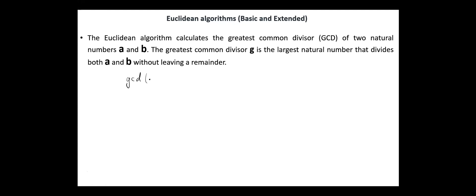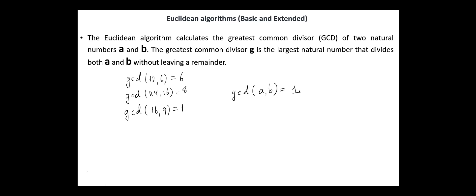The Euclidean Algorithm calculates the greatest common divisor of two natural numbers, A and B. The greatest common divisor G is the largest natural number that divides both A and B without leaving a remainder. For example, the GCD of 12 and 6 equals 6, the GCD of 24 and 16 equals 8, and the GCD of 16 and 9 equals 1. If the GCD between A and B equals 1, then A and B are said to be co-prime numbers, or relatively prime.